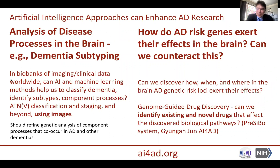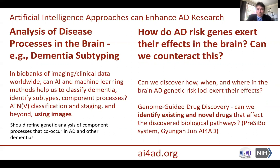There are a number of ways that artificial intelligence approaches can enhance AD research. The first is the analysis of disease processes in the brain, for instance dementia subtyping. We can use biobanks of imaging and clinical data worldwide and see if AI and machine learning methods can help us classify dementia, identify subtypes, and the component processes going on — particularly the ATNV classification system trying to understand the role of amyloid, tau, neurodegeneration, vascular disease, and dementia. This should refine the genetic analysis of the component processes that tend to occur in AD and other dementias.